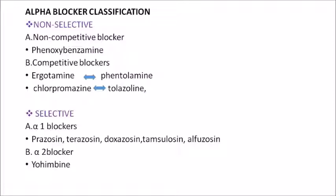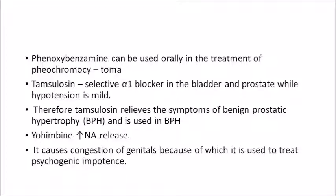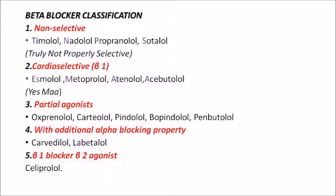Uses of alpha blockers: phenoxybenzamine is used to treat pheochromocytoma — a tumor of the adrenal medulla secreting excess catecholamines. Tamsulosin has selective activity on alpha 1 receptors in the bladder and prostate with mild general hypotensive effect, making it effective for benign prostatic hypertrophy. Yohimbine is an alpha 2 blocker — blocking alpha 2 increases noradrenaline release, causing genital congestion and making it useful in psychogenic impotence.